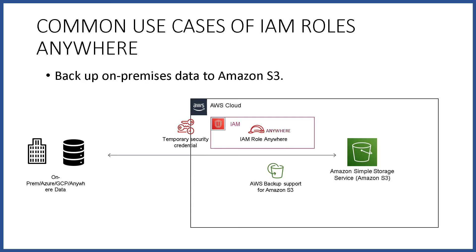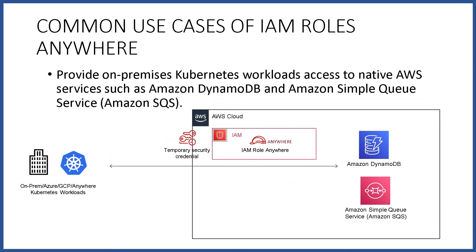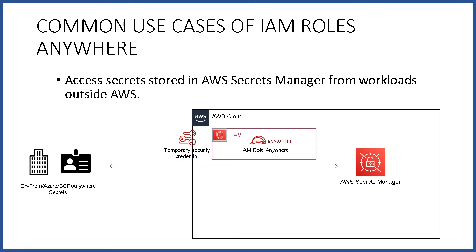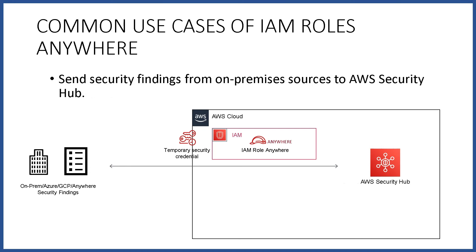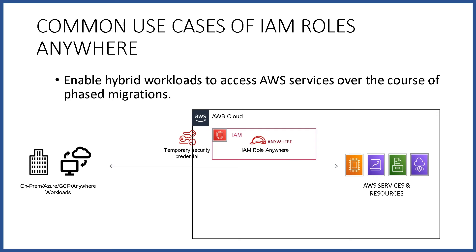Now let's talk about the common use cases of IAM Roles Anywhere. It can be used to back up on-premises data or any other data from Azure or GCP to Amazon S3. It can also be used to provide access to native AWS services such as Amazon DynamoDB or Amazon SQS from your Kubernetes workloads on on-premises, AWS, Azure, GCP, or any other cloud service provider. We can also use it to access secrets stored in AWS Secrets Manager from workloads outside AWS, or to send security findings from on-premises sources to AWS Security Hub. This will also help cloud-agnostic clients to enable their workloads across multiple cloud service providers to access AWS services over the course of phased migrations.